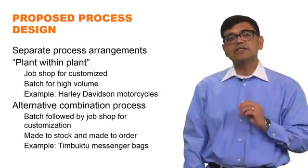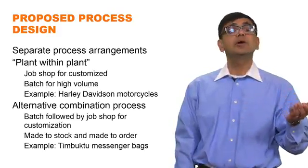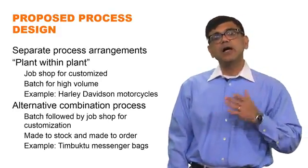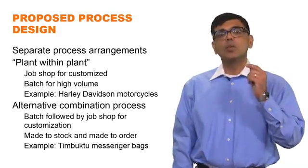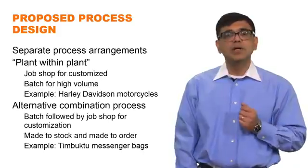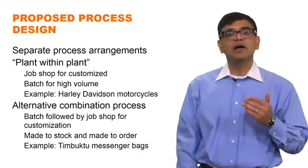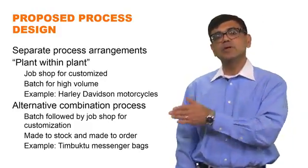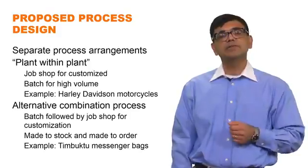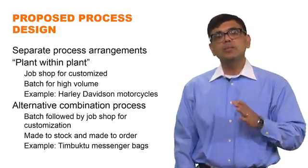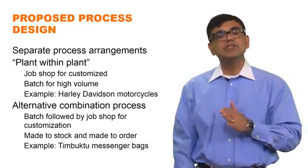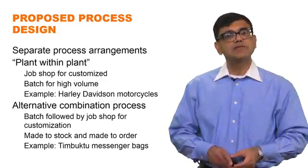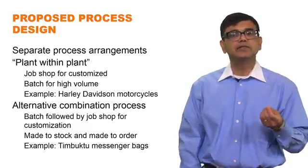The next part of the assignment asked about proposed process designs for serving both types of customers simultaneously. Two options could be considered. The first is a plant-within-a-plant arrangement, where one part of the manufacturing shop operates as a job shop for customized orders, while another part operates as a batch process for high volume orders — both under the same roof, sharing knowledge, but with distinct processes for each customer segment.